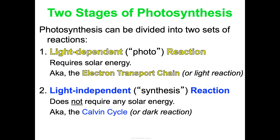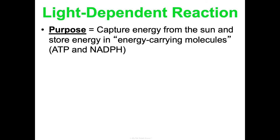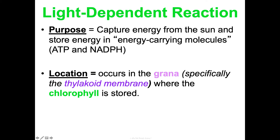We're going to walk through each step — the big picture purpose, where it's happening, a summary, and then the nitty-gritty details. The purpose of the light-dependent reaction is to capture energy from the sun and store it in energy-carrying molecules: ATP and NADPH. You should know ATP from Concept 2. NADPH is another energy-carrying molecule — I remember it's for photosynthesis because it has the P in it. This first step happens in the grana, specifically the thylakoid membrane, because that's where chlorophyll is — the pigment that absorbs sunlight.